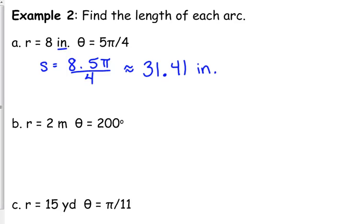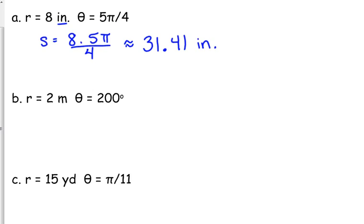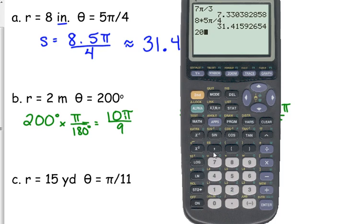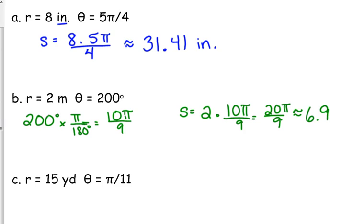If you are ever given units, you need to include units in your answer. Let's move to the one that's got degrees. So, when it has degrees, we know we need to begin by converting that degree to radians. 10 over 9. So, s equals the radius 2 times theta, 10 pi over 9, which is 20 pi over 9, and as a decimal, approximately 6.981, and this was meters.